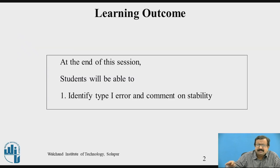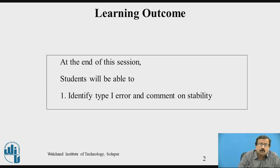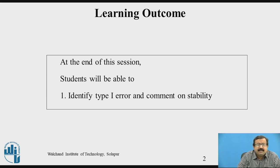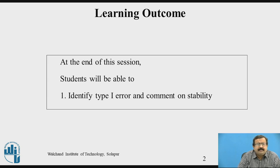The problem arises whenever we prepare Routh's table and the pivot element becomes zero — the element by which we divide. If that pivot, say element a₁₁, becomes zero in the calculation, it creates a zero-division error, which is NaN (not a number), and calculations cannot proceed. This is called a type 1 error. After today's session, you will be able to identify type 1 error and comment on stability.